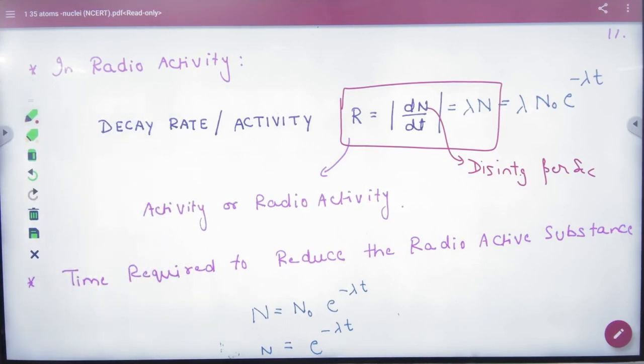Disintegrations per second. So it gives you a numerical activity rate. 1000 disintegrations per second means in one second, 1000 atoms decay. Activity can tell us this.